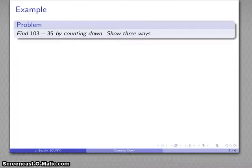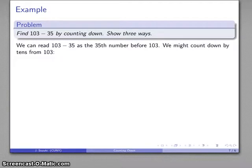Well, let's do a little more complicated problem. 103 minus 35 by counting down. And just to see the variety that is possible here, let's take a look at this in three ways. Mainly because this is a problem that can be solved whatever your level of knowledge happens to be. If the only thing you know how to do is count and count backwards, you can solve this problem. If you know more, you can solve the problem more efficiently.